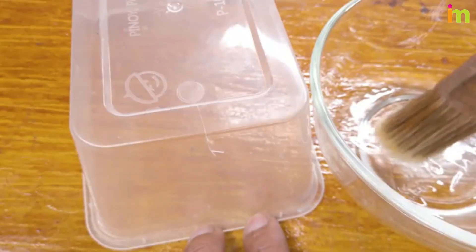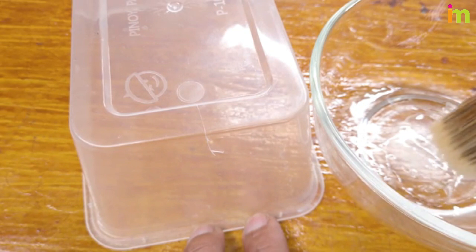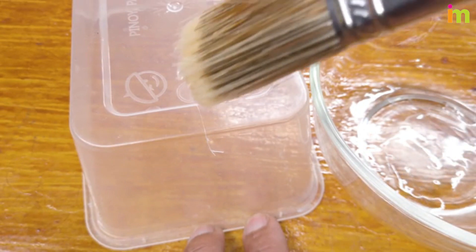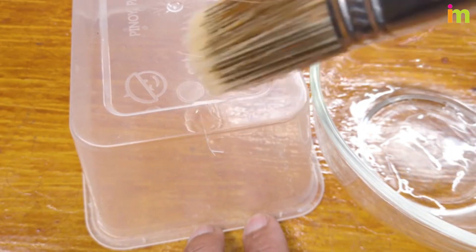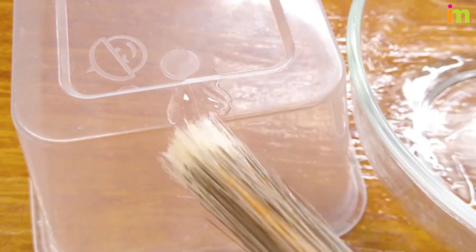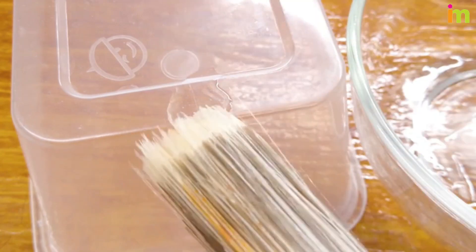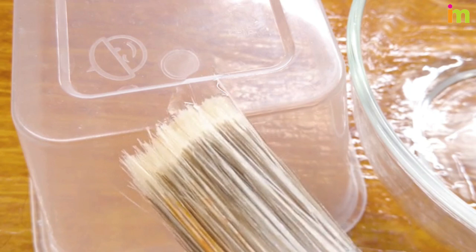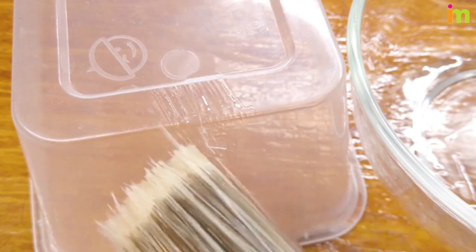With the acetone fully removed from the mixture, you can apply the plastic slurry made from your scrap plastic. Dip a small paintbrush or swab into the liquid plastic and use it to fill in the crack. Be sure to fill it in completely and apply the putty as evenly as you can.